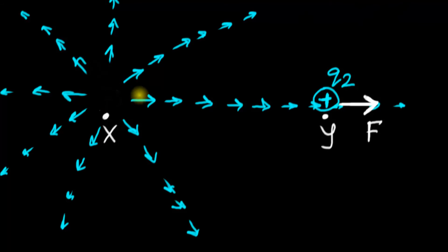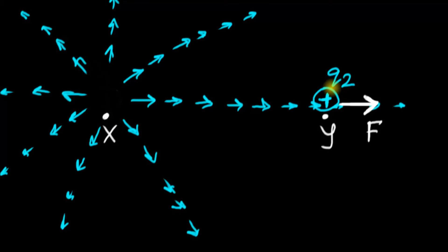If the two charges were influencing each other directly — not using space as a mediator — then the moment Q1 disappears, the force must also instantly disappear. But careful experiments show that's not true. The force remains for a fraction of a second. There is a measurable delay between the disappearance of this charge and the disappearance of the force. It doesn't happen instantly — it takes some time.